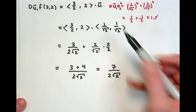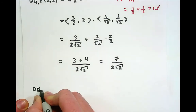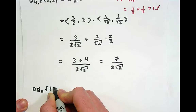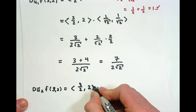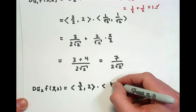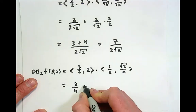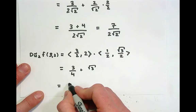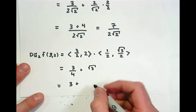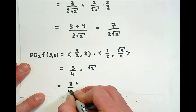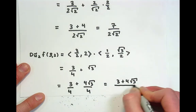Let's also find the directional derivative in the second direction. This is (3/2, 2) dotted with (1/2, √3/2), which gives 3/4 + √3. Finding a common denominator, this becomes 3/4 + 4√3/4 = (3 + 4√3)/4. Let's switch over to Mathematica and view both of these directional derivatives as the slopes of their respective tangent lines.